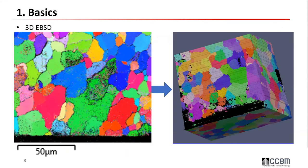So this is raw EBSD data without any noise reduction. If EBSD is a routine technique, why do we still go to 3D? I would say it's much like — if you are watching a movie in the cinema, it's okay, but why are we still going to IMAX? For 3D EBSD, there are scientific challenges and questions that require 3D data.